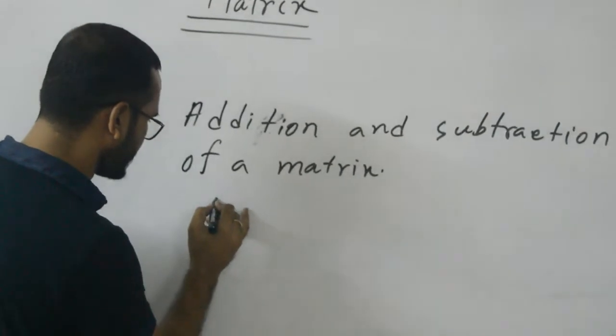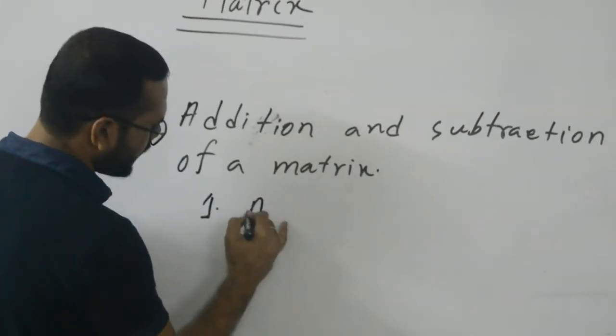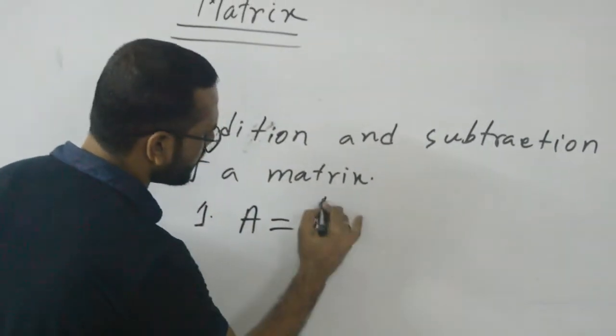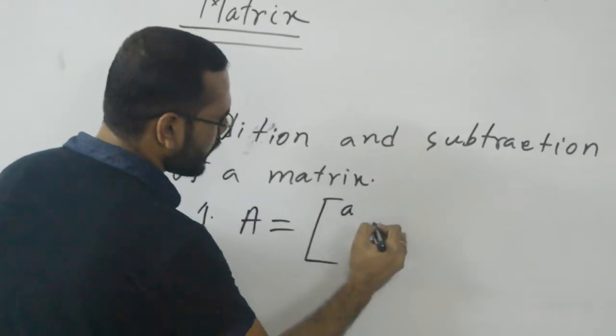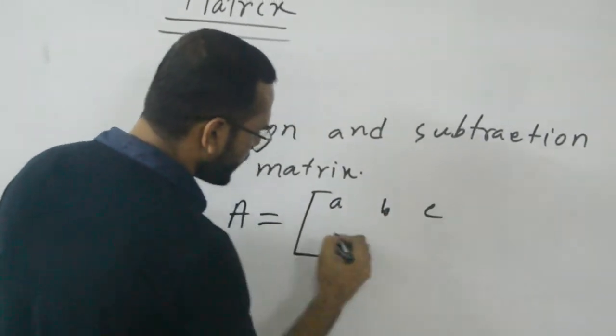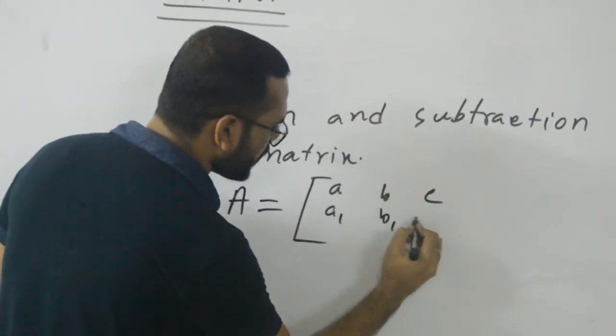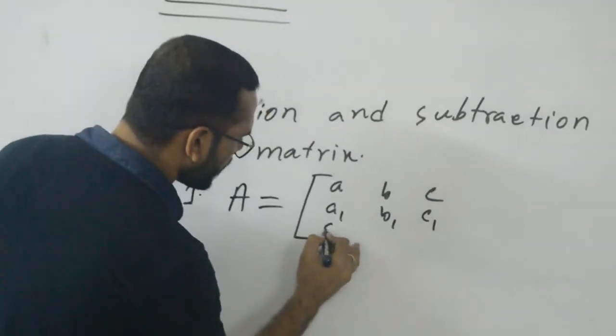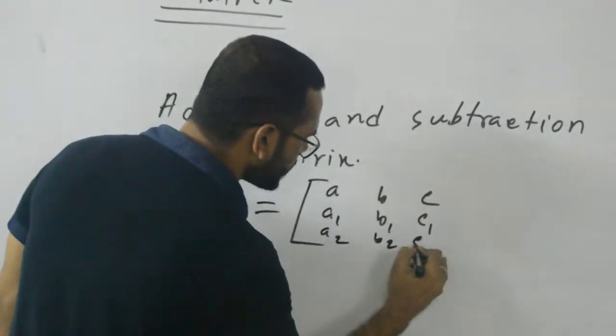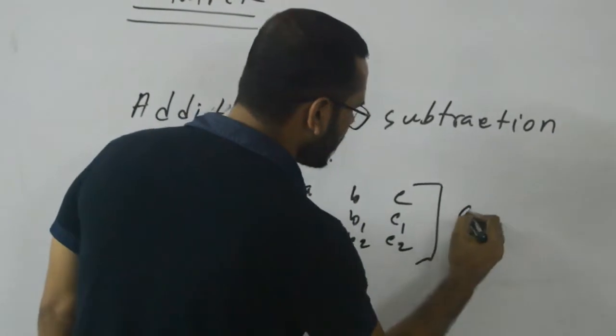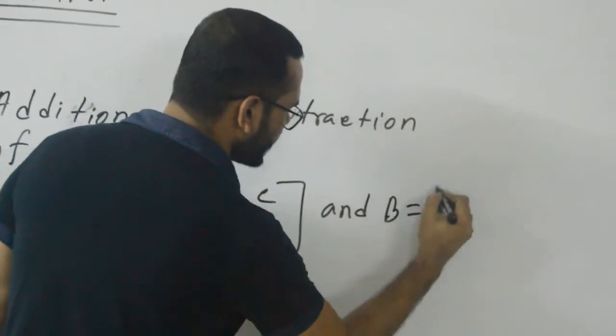Here, if the first matrix is A, it contains entries: a, b, c in the first row; a1, b1, c1 in the second row; and a2, b2, c2 in the third row.